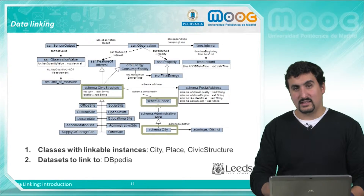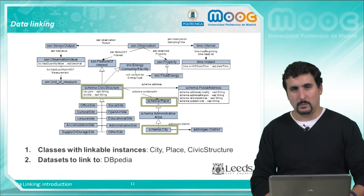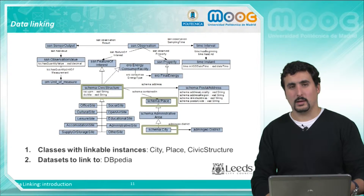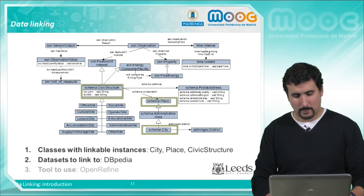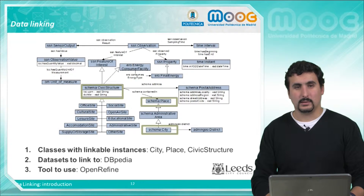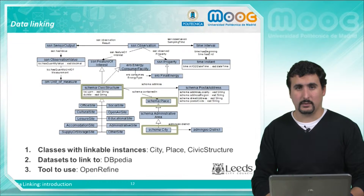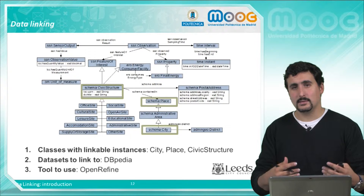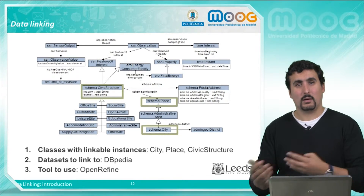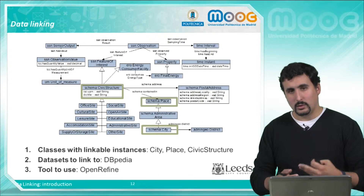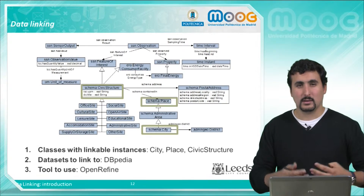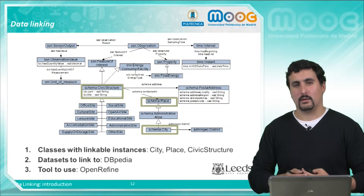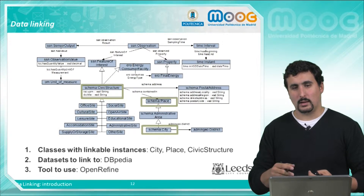The second thing to do is to select the target dataset — in this case we are selecting DBpedia. We are going to explore this dataset in order to obtain matching instances. The tool we are going to use is OpenRefine, an open source tool based on Google Refine. It supports many activities such as data analysis, cleaning and transformation based on CSV files, and it also includes an RDF extension plugin that allows us to transform the processed data into RDF and find links to external resources.